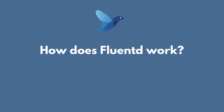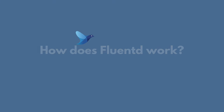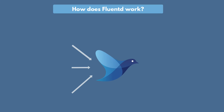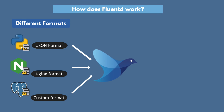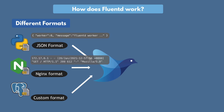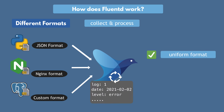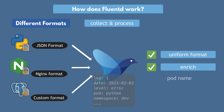So how does Fluentd work? Fluentd gets deployed into the cluster and starts collecting logs from all the applications — your own applications, third-party applications, all of it. Now these logs that Fluentd collected will be of different forms and formats, like JSON format, Nginx format, some custom format, and so on. So Fluentd will process them and reformat them into a uniform way. On top of that, you can enrich your data with Fluentd, adding additional information to each log entry like pod name, namespace, container name, and so on.